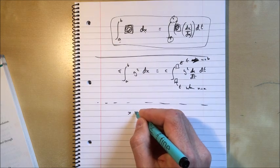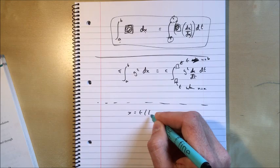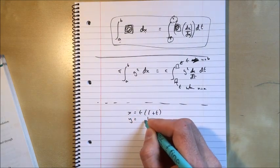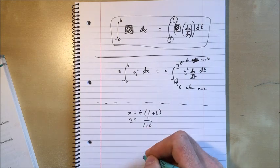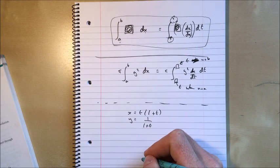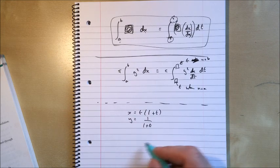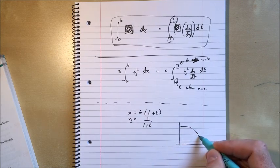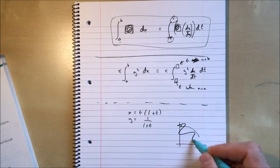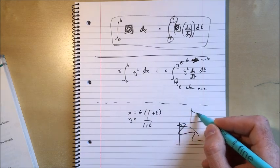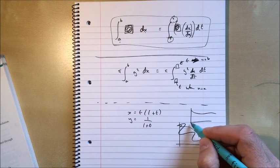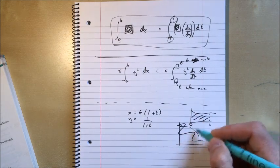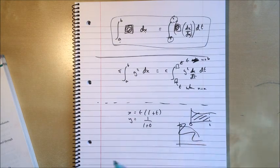So if we have the parametric curve given by x equals t times 1 plus t, and we have y equals 1 over 1 plus t, I want to find the region bounded by c, the x-axis and the lines x equals 0 and x equals 2. So in other words, I'll copy roughly the shape of this from the book. So from x equals 0 to x equals 2, it's that area that is rotated around, in this case, the x-axis.